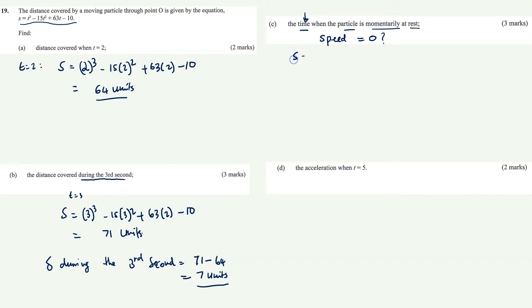We've got distance as a function: t cubed minus 15t squared plus 63t minus 10. To get speed, we need to differentiate with respect to time. So ds/dt equals 3t squared minus 30t plus 63.